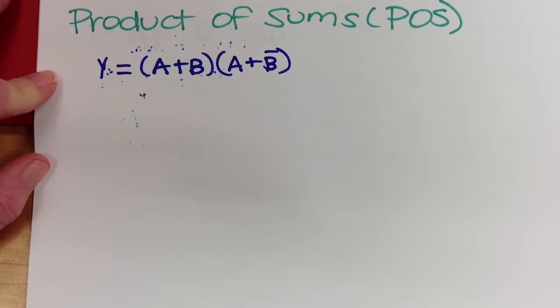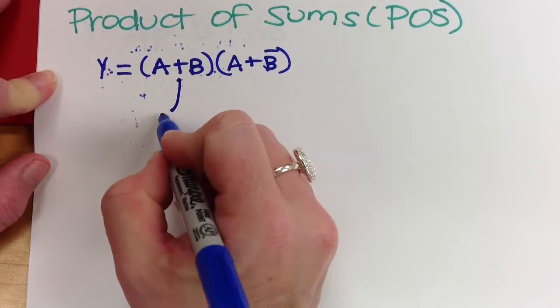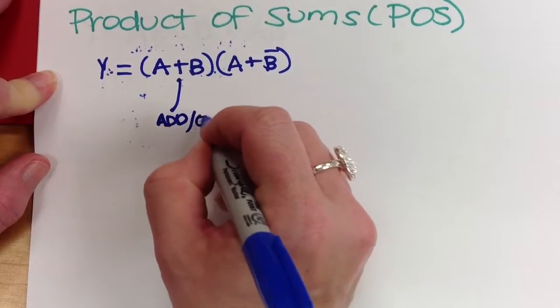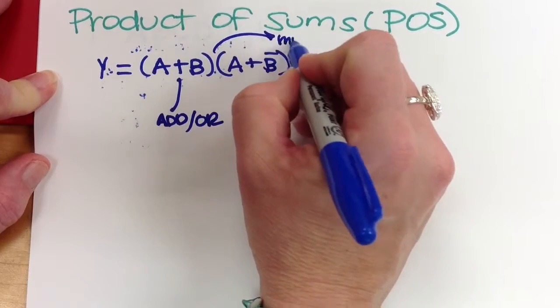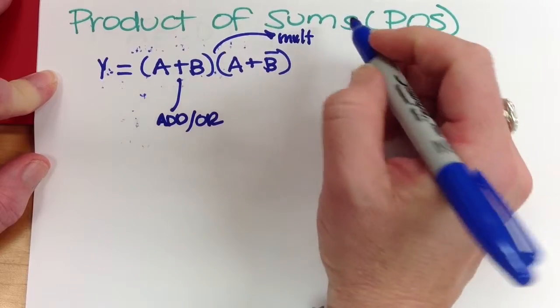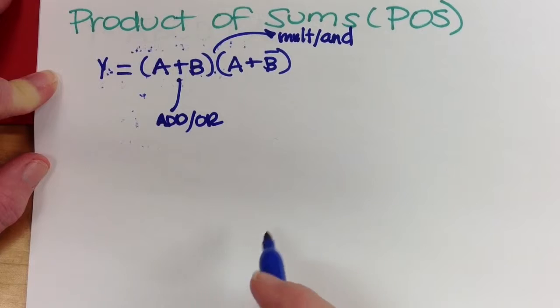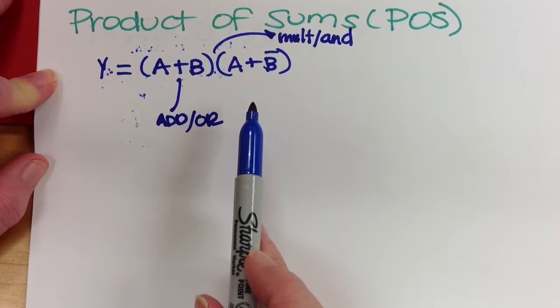So when we look at this one, it's sums, we add them, and then those things are multiplied or ANDed together. So this form is different, and it's going to tend to make you uncomfortable right now.